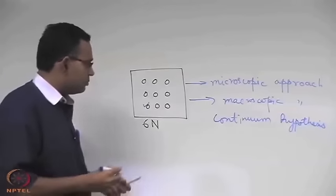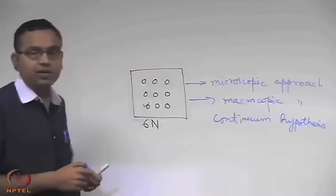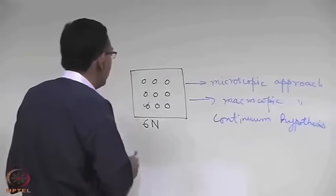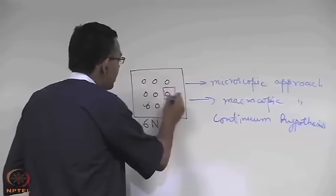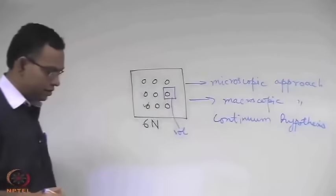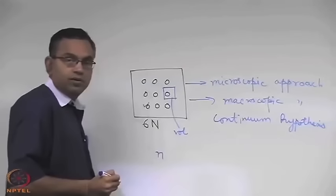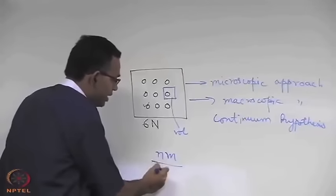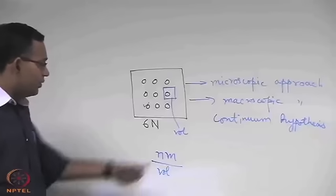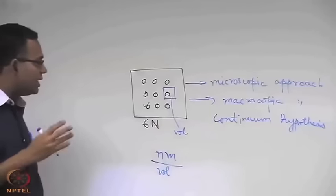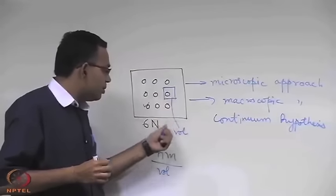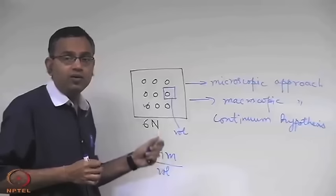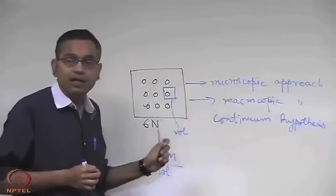To get a more detailed insight, let us say we want to calculate the density of a gas. To do that, we need to identify an elemental volume, find out the number of molecules in that elemental volume, and if small m is the mass of each molecule, then the density is the total mass divided by the volume. But how small should the volume be? To get a real point-to-point variation, this volume should be as small as possible, but not tending to zero. It can tend to a critical volume up to which the continuum hypothesis will be valid, not below that.